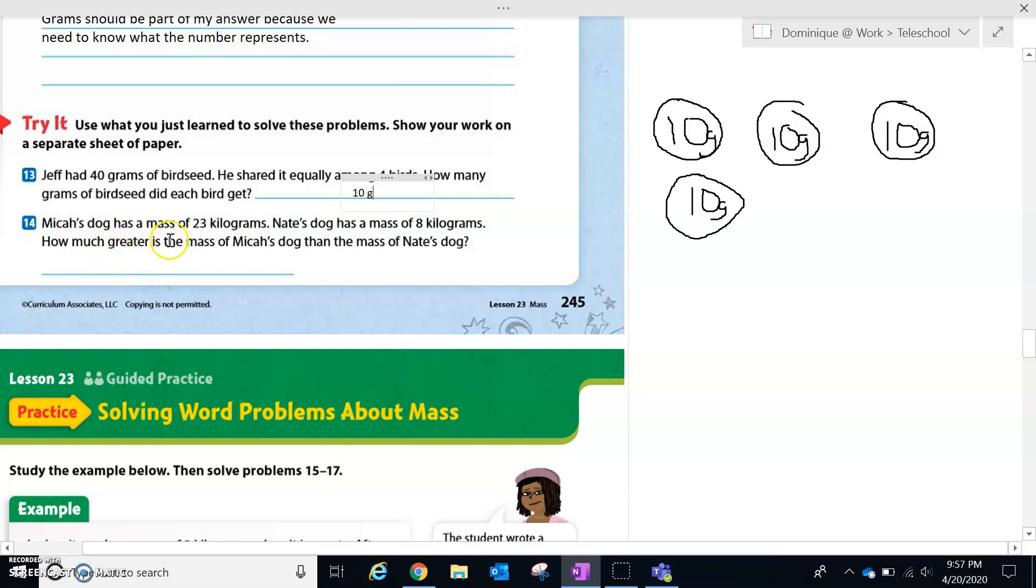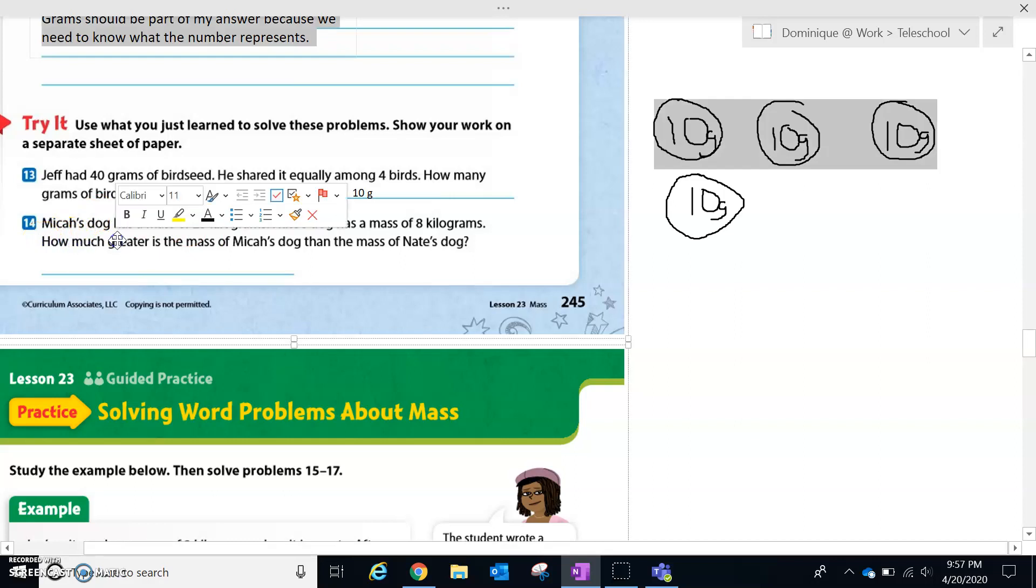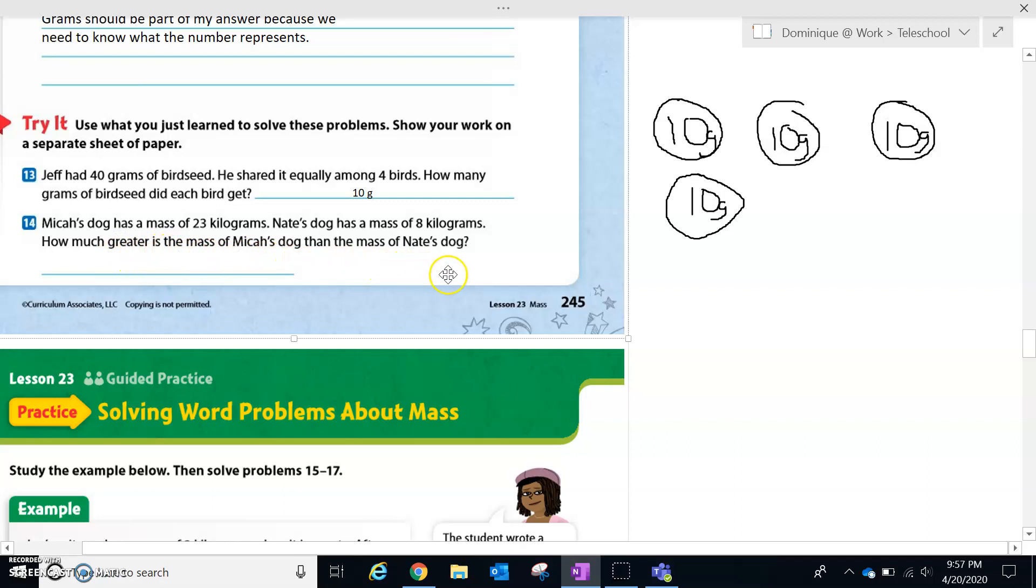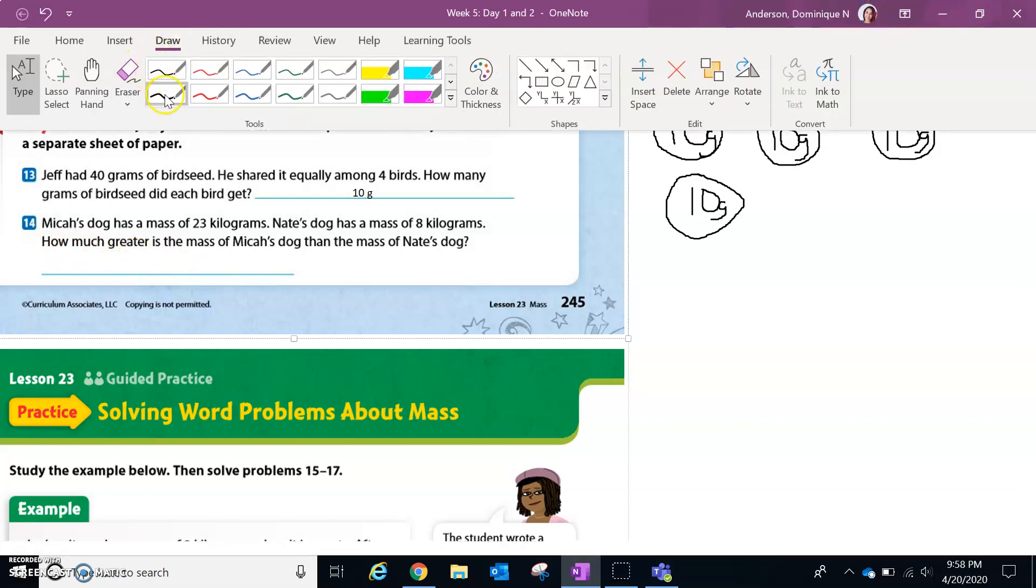Next one. Micah's dog has a mass of 23 kilograms. Nate's dog has a mass of 8 kilograms. How much greater is the mass of Micah's dog than the mass of Nate's dog? So now we have a key word in there. I want you to think about what your key word is in your question. So here's our question: How much greater is the mass of Micah's dog than the mass of Nate's dog? How much greater is our key word, which means we're going to do what operation? Subtract. Good job, guys.